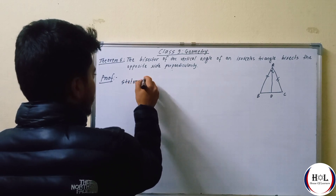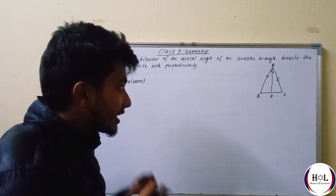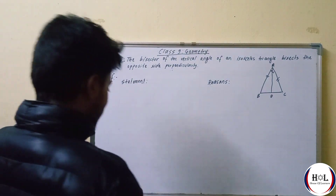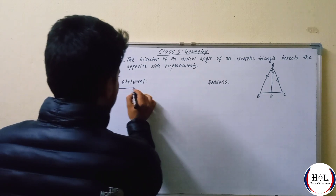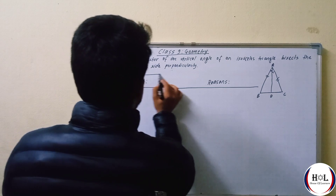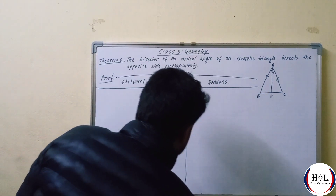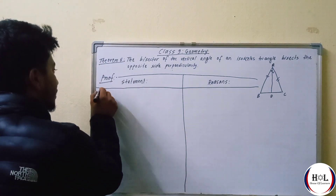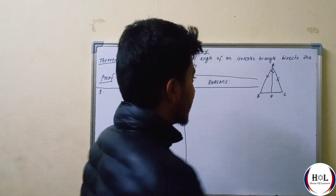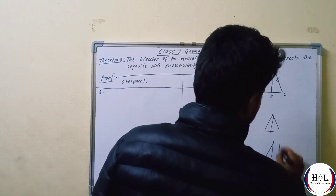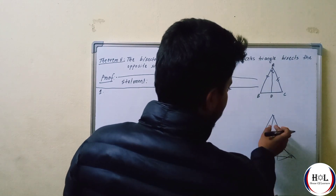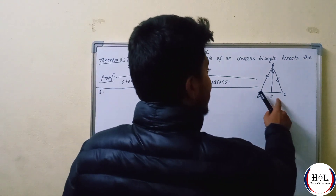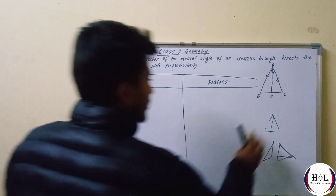I will make a table with statements and reasons. The first statement — I will make it in two triangles. Here is the triangle. We will make two triangles — triangle BAD and triangle DAC.